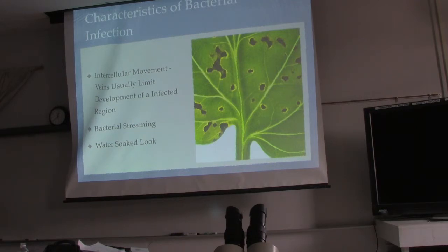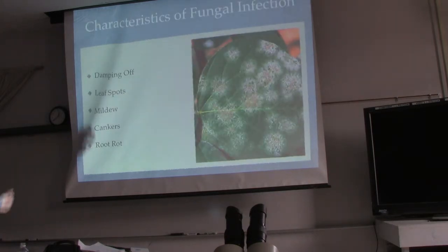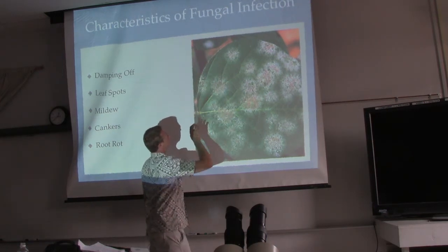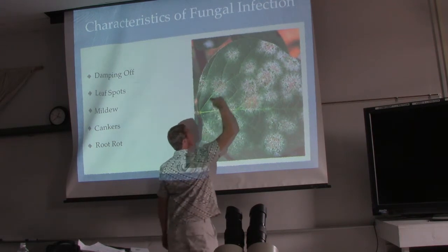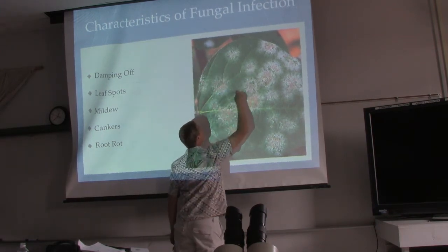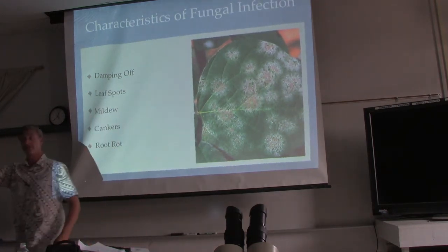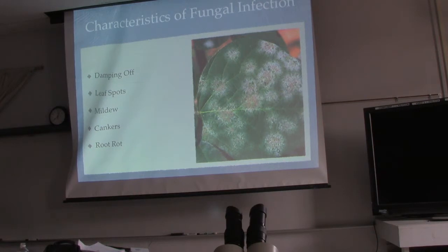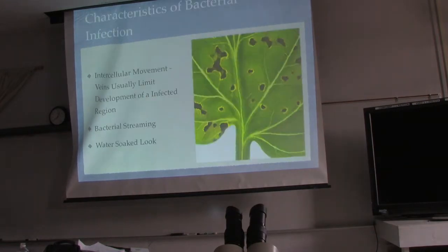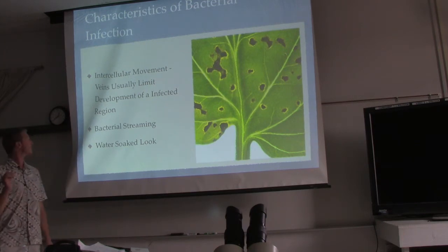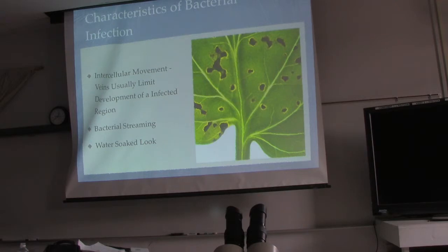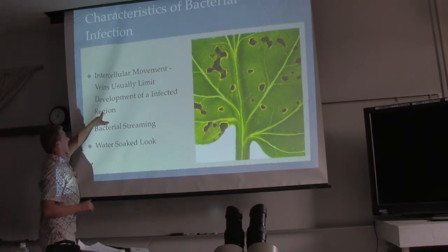Intercellular movement is key to identifying bacteria. In fungi, we can see that the fungus can lay on top of the veins — it's indiscriminate about where it inhabits. But bacteria usually gets stopped by the veins because it moves intercellularly — it's inside the plant structure, not on top of cells like fungus. So veins usually limit the development of an affected region.